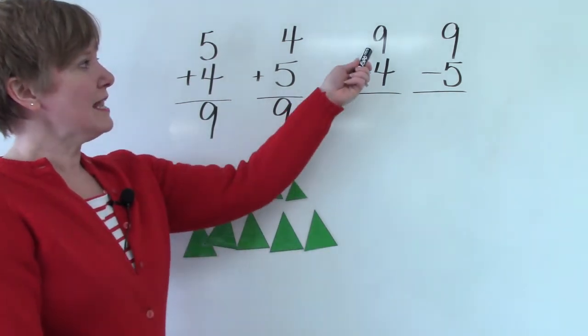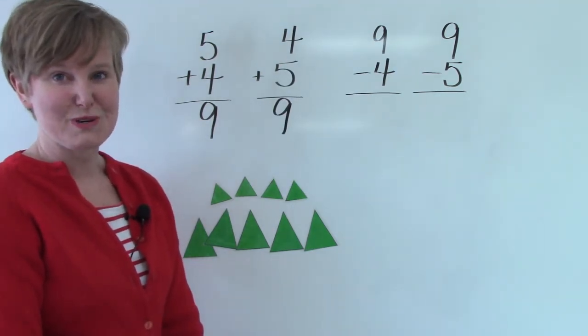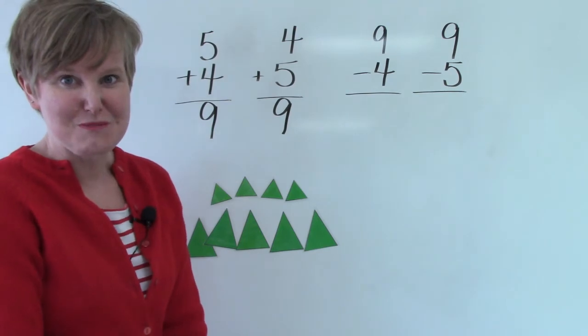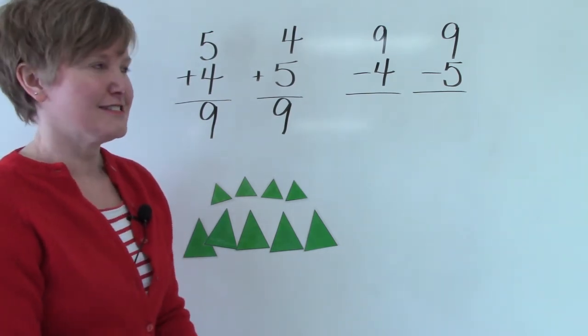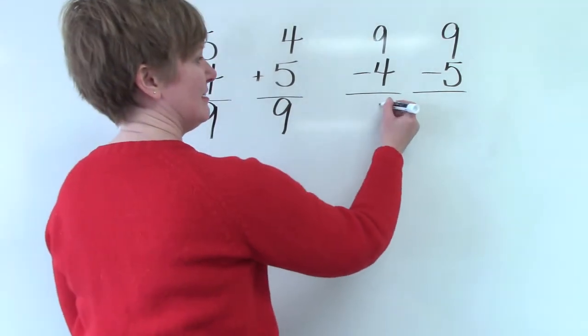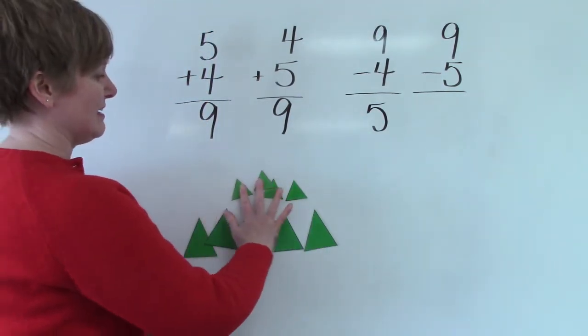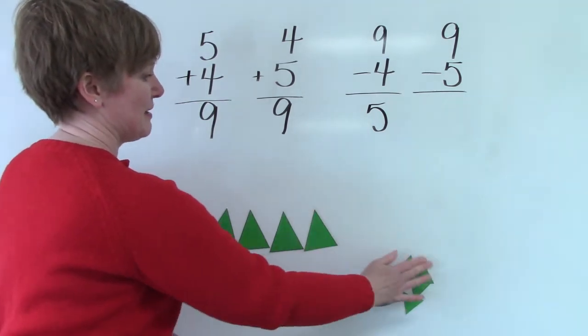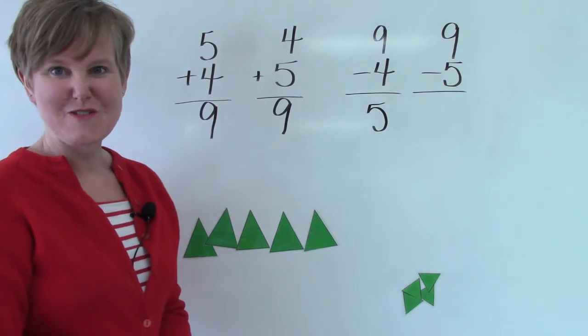If we have 9 and we take 4 away, do you know what the answer is? Even before I do it with the triangles? Did you say 5? You're right. 9 take away 4 is 5. 1, 2, 3, 4, 5.